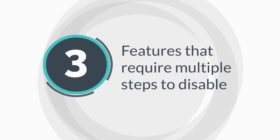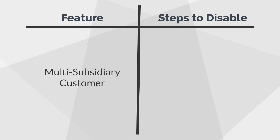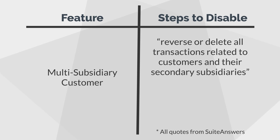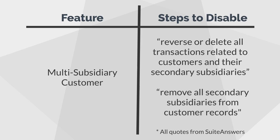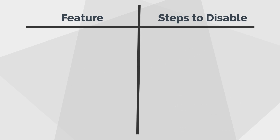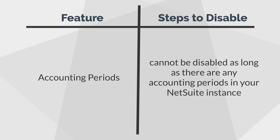Third, there are features that require multiple steps to disable. One of these features is Multi-Subsidiary Customer. According to SuiteAnswers, in order to disable this feature, you would have to reverse or delete all transactions related to customers and their secondary subsidiaries and remove all secondary subsidiaries from customer records. Another of these features is Accounting Periods, which you cannot disable as long as there are any accounting periods in your NetSuite instance.